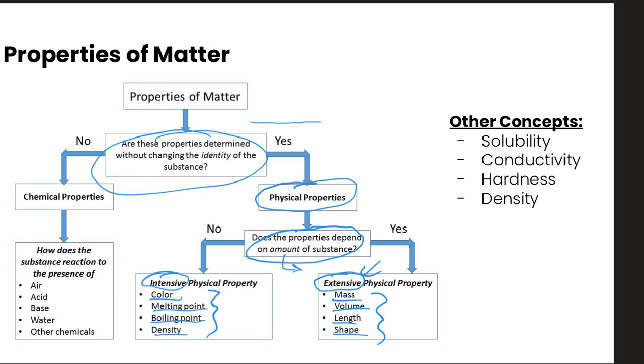Now if the properties of matter are determined by having to change the substance, those are called our chemical properties. Chemical properties of matter really describe its potential to undergo some sort of chemical change or reaction, depending on its composition.